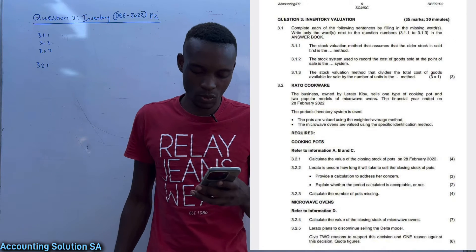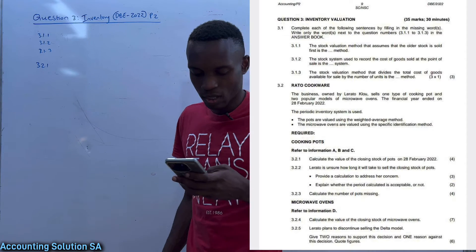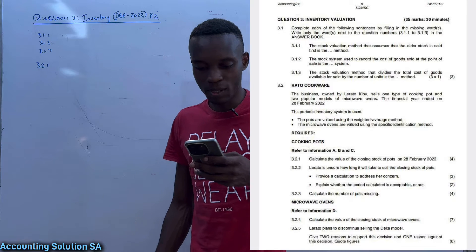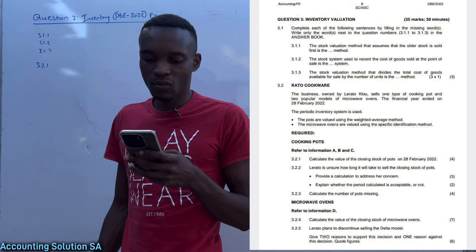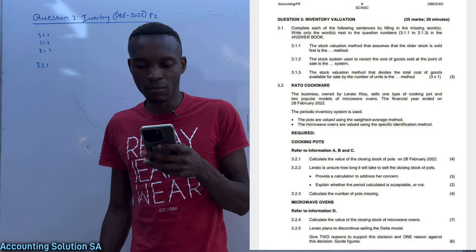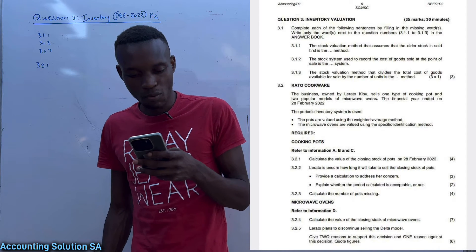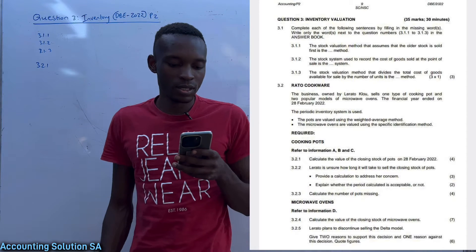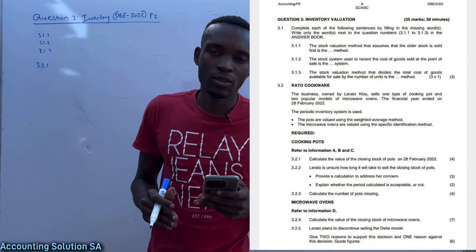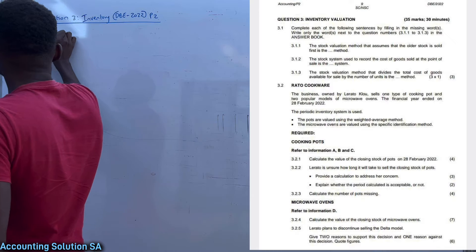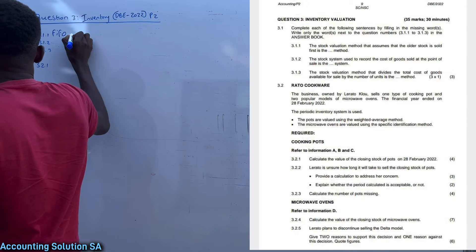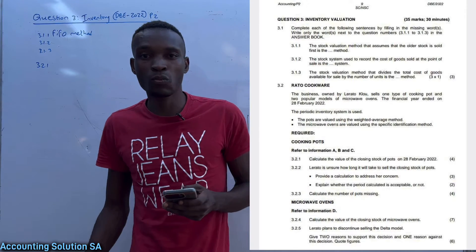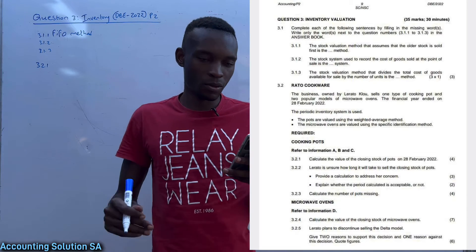Question 3.1: complete each of the following sentences by filling in the missing words. Write only the words next to the question number in the answer book. 3.1.1 — the stock valuation method that assumes that older stock is sold first is called the FIFO method. This method assumes that inventory purchased first is going to be sold first, which means the one bought last will also be sold last.